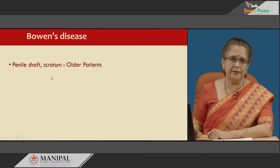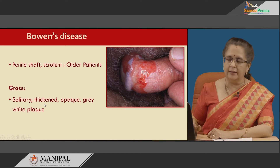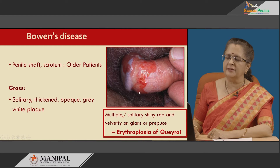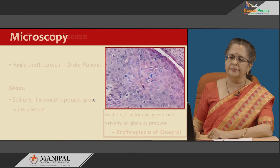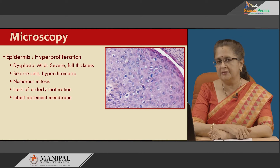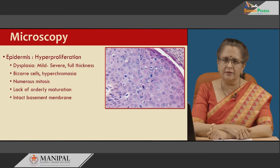In Bowen's disease, the penile shaft as well as scrotum is involved. Patients are usually older, and grossly it is a solitary thickened opaque grey-white plaque. If it is red, then it is known as erythroplasia of Querat — multiple solitary shiny red plaques seen on the glans or prepuce. Microscopy is characterized by varying degrees of dysplasia and hyperplasia, meaning increased thickness of the stratified squamous epithelium, anisonucleosis, mitotic figures, loss of architecture, and loss of polarity.